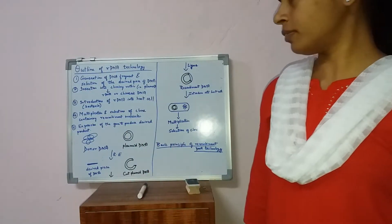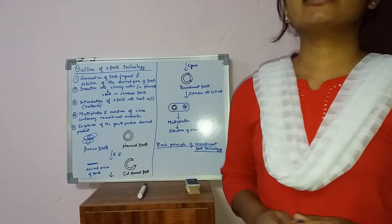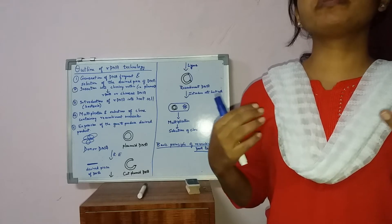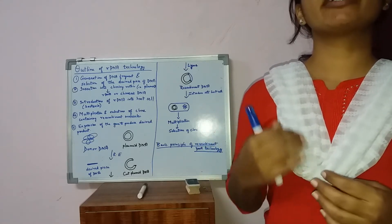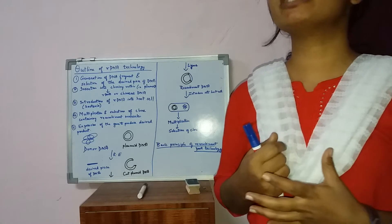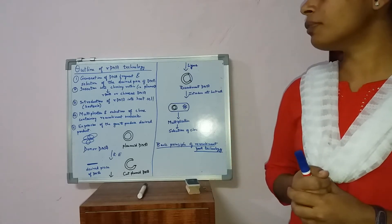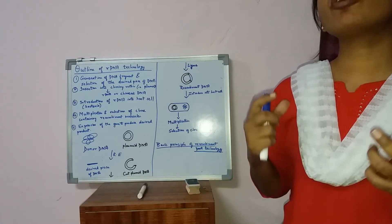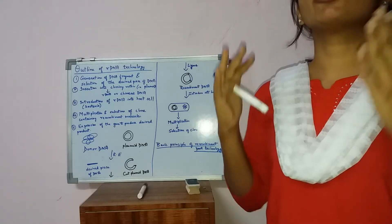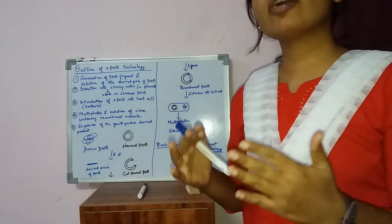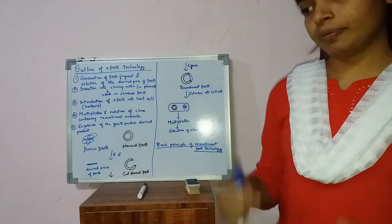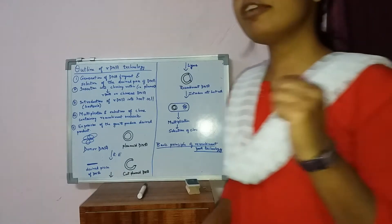Hello dear students. In the last class we have seen about recombinant DNA technology — what is the purpose of creating recombinant DNA. Today we will see the outline of recombinant DNA technology. If we want to create recombinant DNA or chimeric DNA, how do we do it? There are basically four steps.